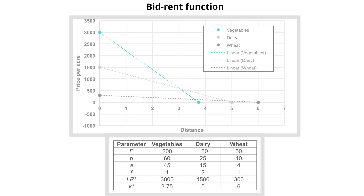The vegetable farmer is willing to pay $3,000 at the market center and $2,500 slightly less than a mile out. By the time we reach 3.75 miles, his budget is exhausted — beyond that, he can't make any money because it's too far to carry these goods given the density of production. We have similar curves for dairy and wheat. When we plot these three bid-rent functions, we can look at where the curves intersect one another to find what area would be served by any given good.